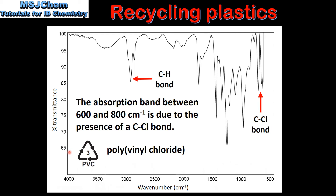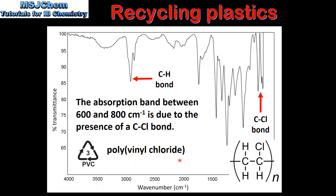By using the resin identification codes we can deduce that this infrared spectrum is for polyvinyl chloride. This is due to the presence of a carbon to chlorine bond and a carbon to hydrogen bond. Here we have the repeating unit for polyvinyl chloride — as you can see it contains a carbon to hydrogen bond and a carbon to chlorine bond.